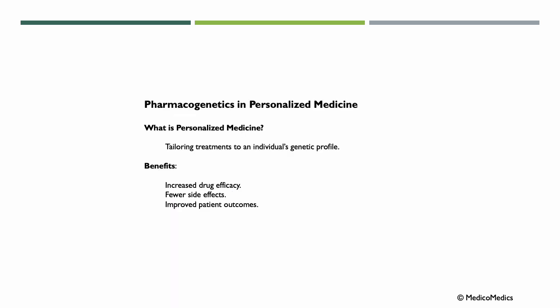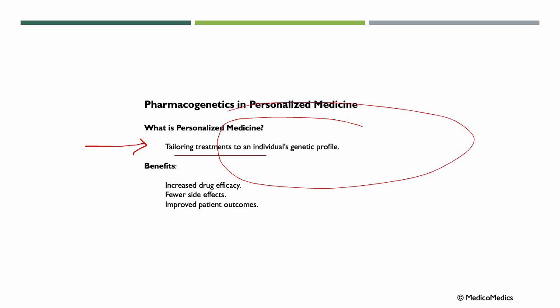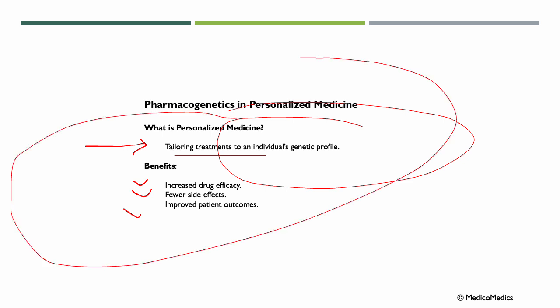As we've mentioned, personalized medicine is tailoring treatments to an individual's genetic profile. Key benefits include fewer side effects, better drug efficiency, and improved patient outcomes. The idea is to use your specific genetic information to give you the best treatment possible — like building a custom-made suit.